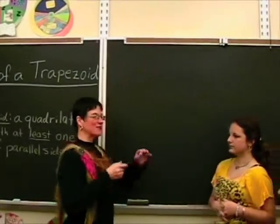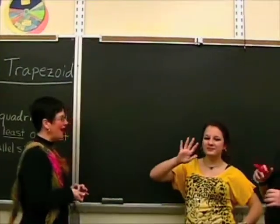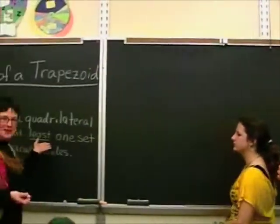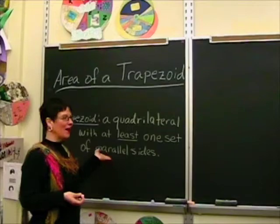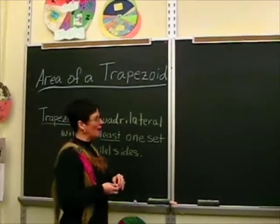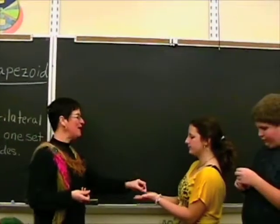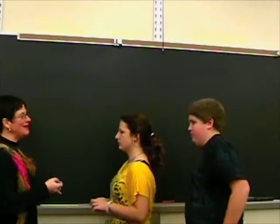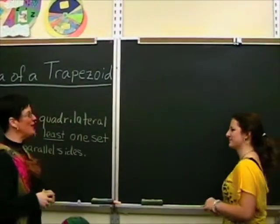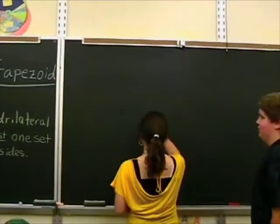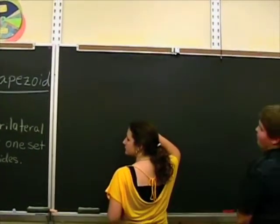Alright, today we have some volunteers here, and we have told the volunteers the definition of a trapezoid. Now, I'm going to hand the young lady a pink chalk, and I'm going to hand the young man a blue chalk. And I'm going to step back, and they are going to try and draw a trapezoid based just upon the definition.